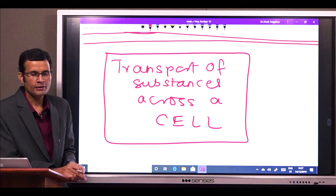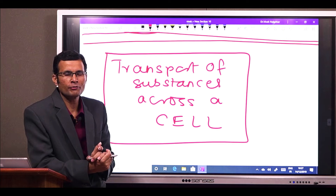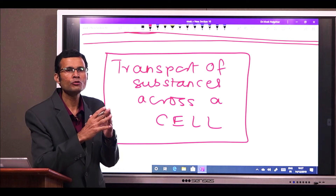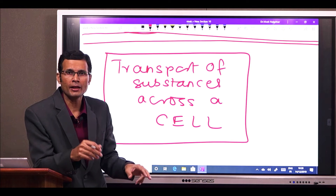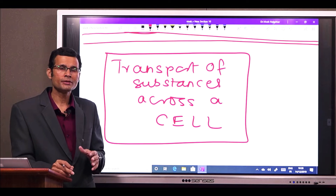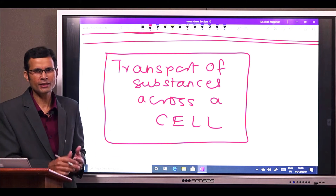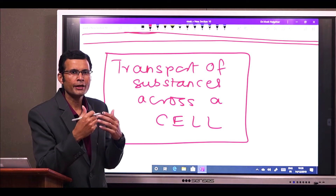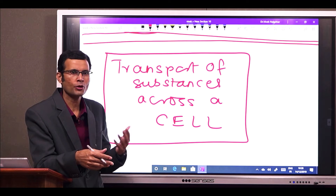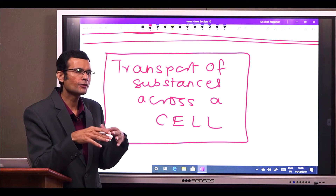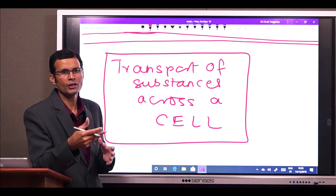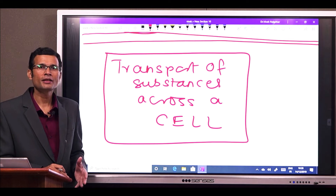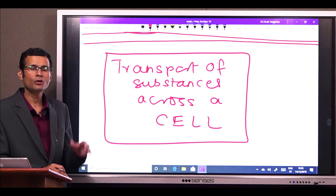Hi friends, this video is a short conceptual video about a comparison between the movement of substances across a cell. I am not talking about the substances moving across the cell membrane, which we have discussed in a previous video — for instance, substances moved by endocytosis, diffusion, or active transport. In this video, we are going to see how substances cross an entire cell.